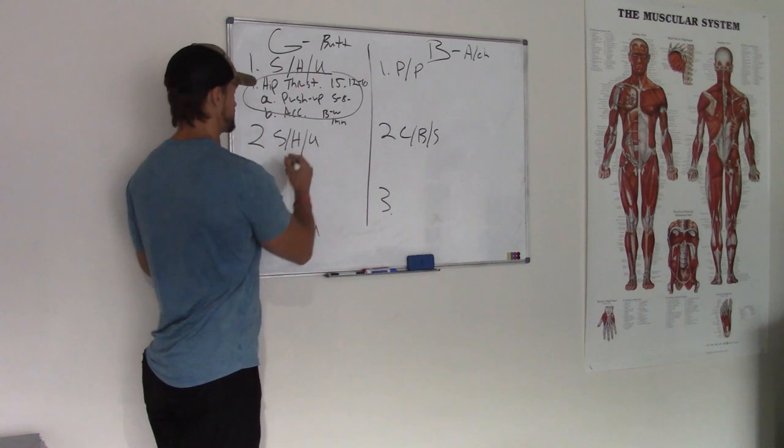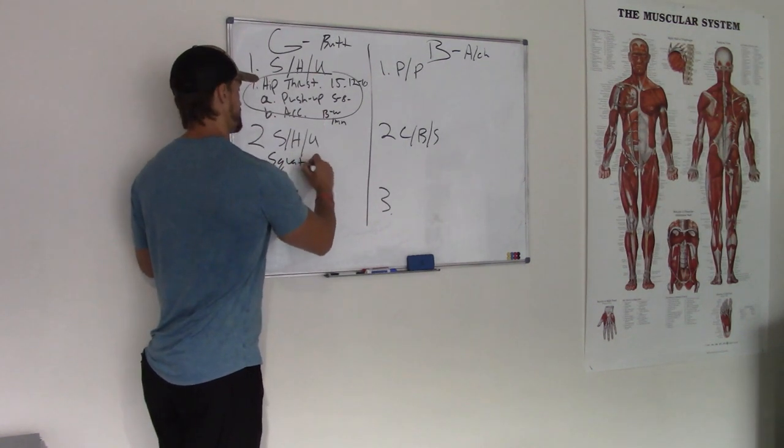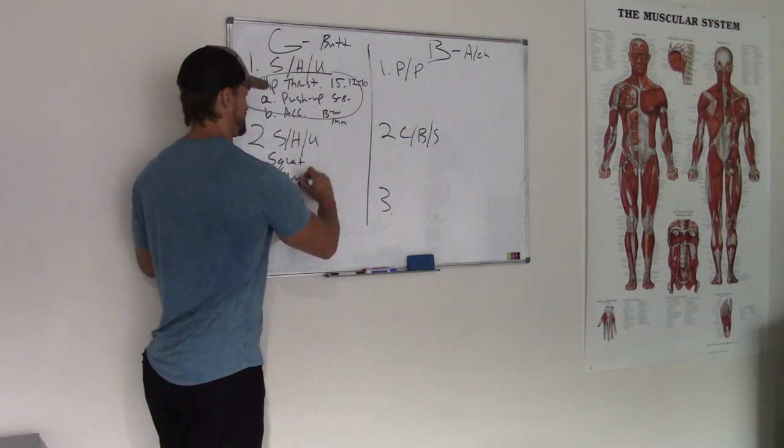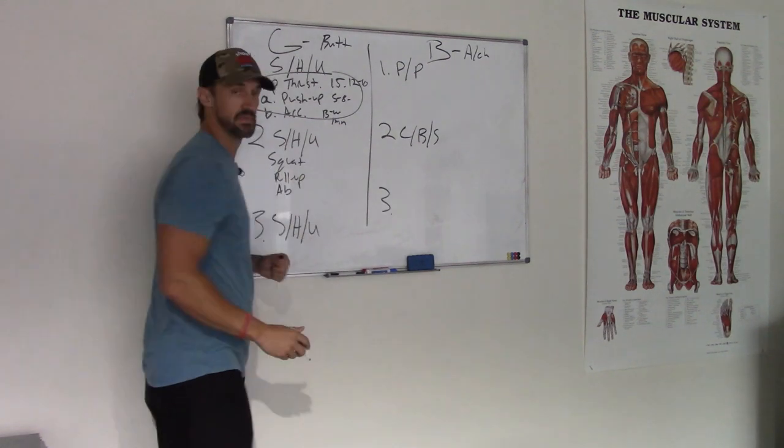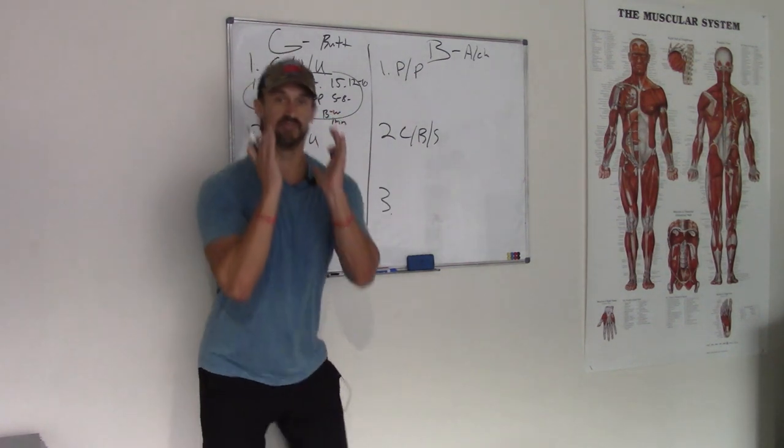Let's do a hinge. We did a hinge. So let's do a squat. Let's do a pull up. And let's do an ab exercise. Goblet. Start here. 15 reps.